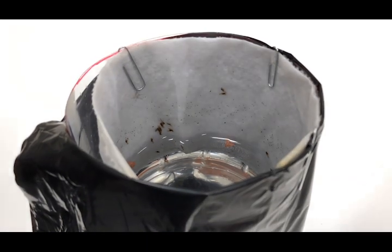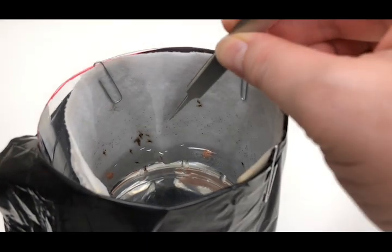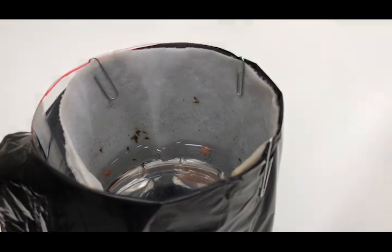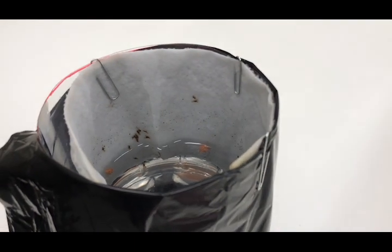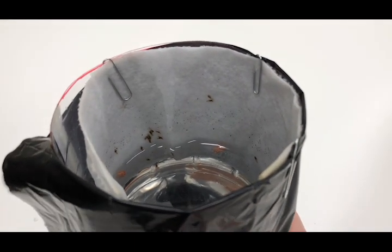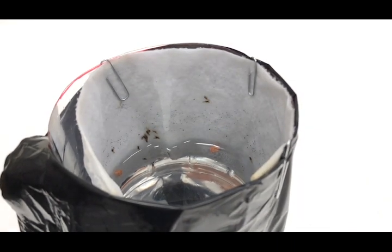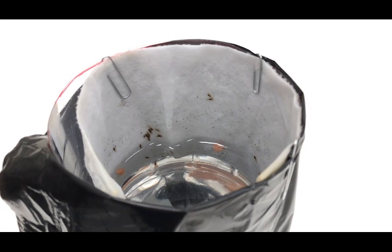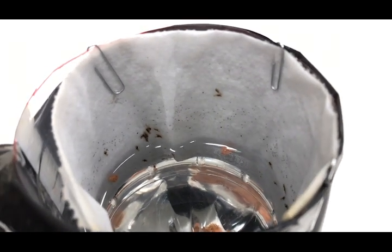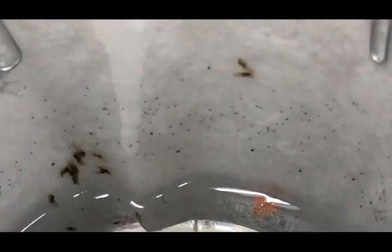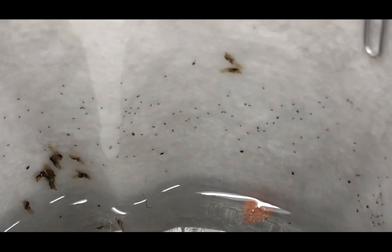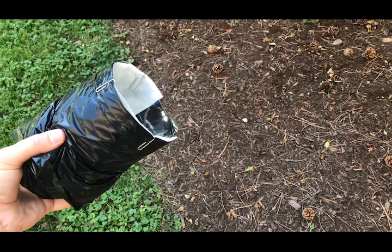Once your trap has been left out for a few days, you can check it for eggs. The eggs are small, oblong, and black in color. You should see them sprinkled above the water line on the paper towel. Let these eggs sit for two to three days in a safe location outdoors. Try to keep them away from ants who will destroy the eggs.